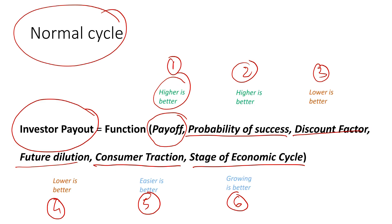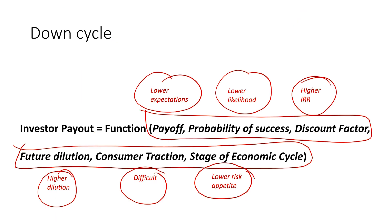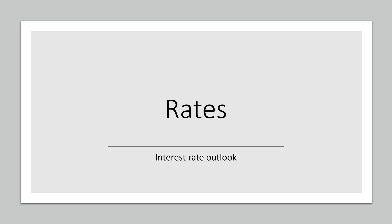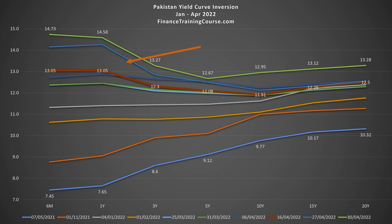In a normal cycle, valuations tend to grow upward. In a down cycle, they head downward. But that's just one part of the equation. The second, more important part is what happened to the interest rate environment. If you look at the trajectory of the Pakistani rate environment from January to April 2022, this shows how quickly things change.